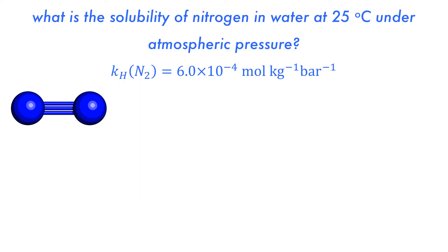Let's look at an example. What is the solubility of nitrogen in water at 25 degrees celsius under atmospheric pressure? The first thing to remember is that nitrogen makes up 78% of atmospheric air, which means that the partial pressure of nitrogen will be 0.78 bar because atmospheric pressure is 1 bar.